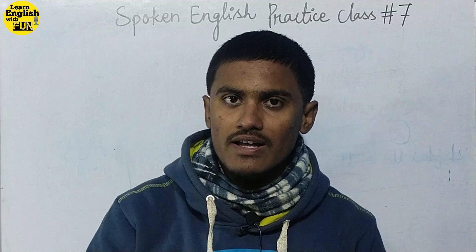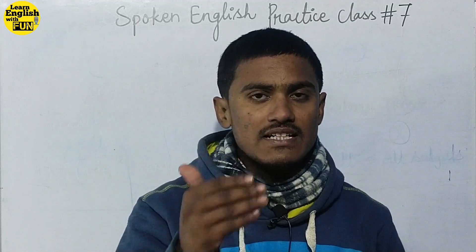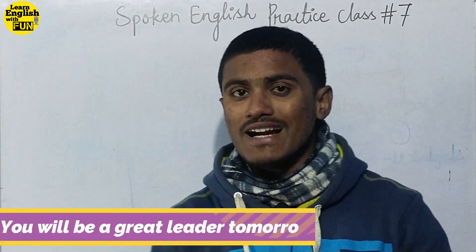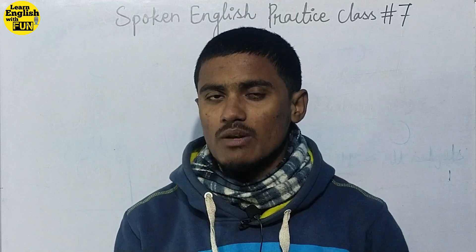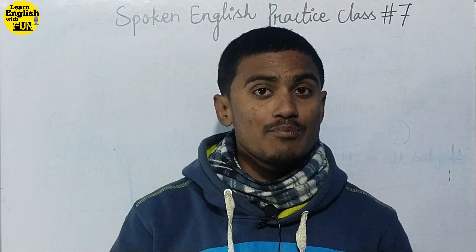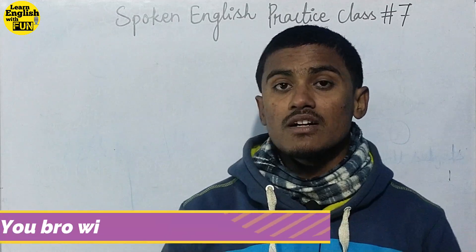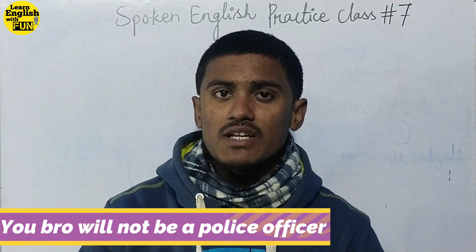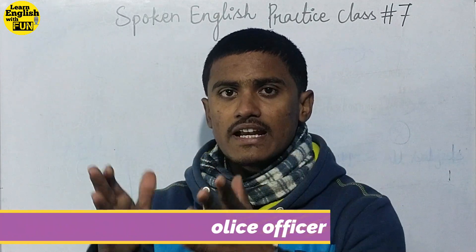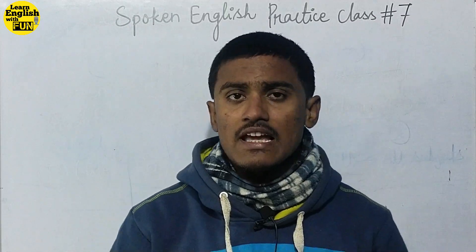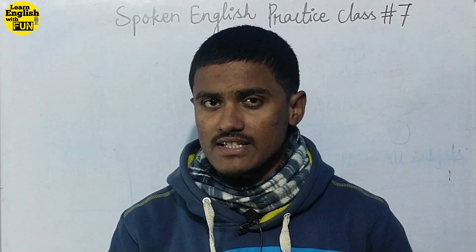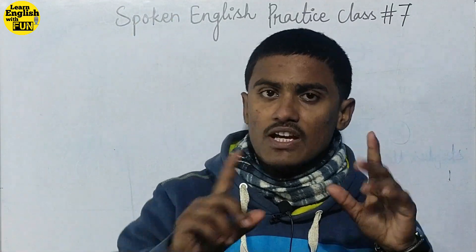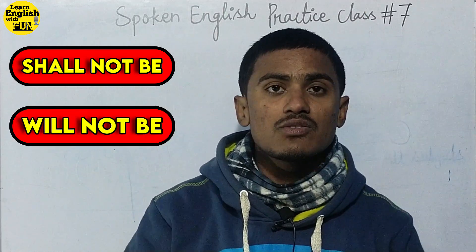For example: 'You will be a great leader tomorrow.' 'Your brother will not be a police officer.' This is how you use positive and negative sentences. Remember: when you are using negative sentences, place 'not' immediately after 'shall' or 'will', then place 'be' after it — 'shall not be' or 'will not be'. Like this, you all have to use your future sentences.